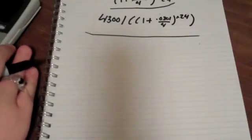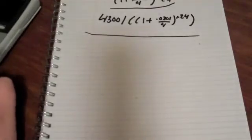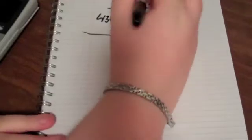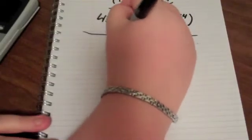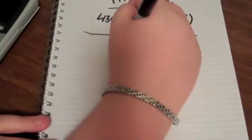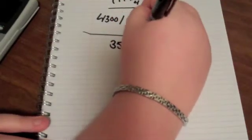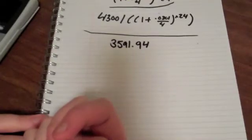So, open parenthesis 1 plus 0.0301 over 4 caret key 24. And then you get 1.19 something. Then you put 4,300 in your calculator divided by 2nd key answer, 2nd key negative sign. And that puts ANS on your calculator screen. Then you do enter. And so, to get 4,300 dollars in 6 years you need to deposit 3,591 dollars and 94 cents. And on your calculator it'll be like .9353, etc.